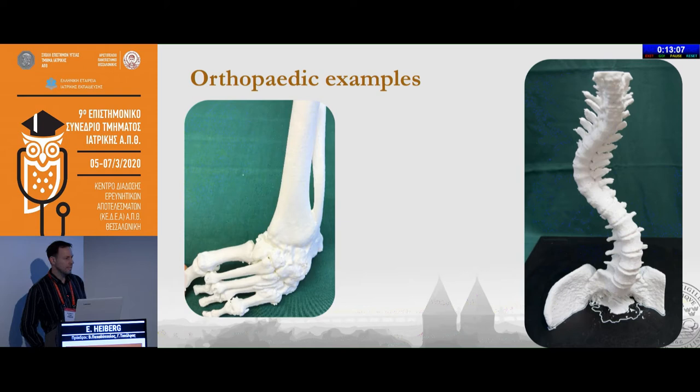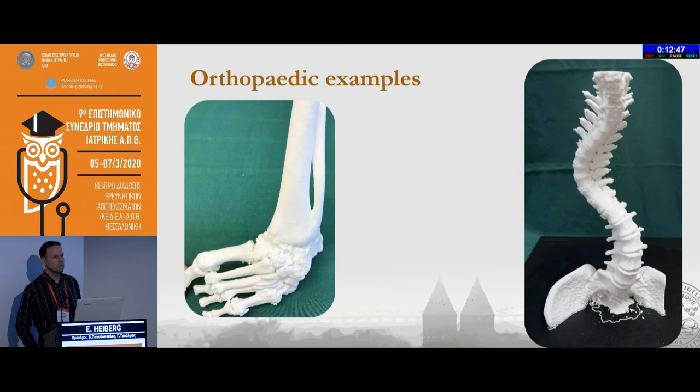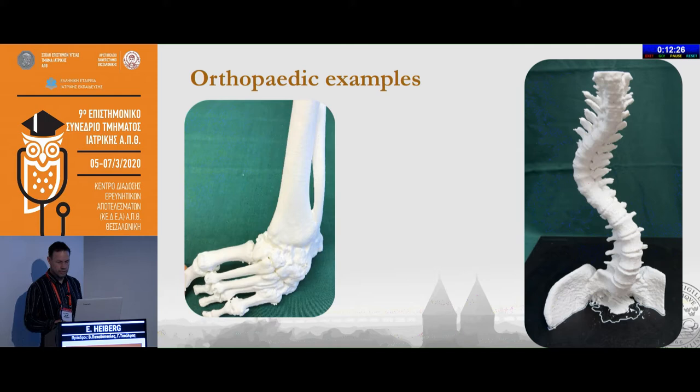Here are some orthopedic examples. To the left you have a foot of a girl whose foot was smashed by a car as an infant, and now they are trying to regain some mobility. The orthopedic surgeon typically gets three or four models from us for each case and cuts them up, trying different cuts to increase mobility. To the right is a patient with a scoliotic vertebrae before surgery to plan how to put in the straightening device.